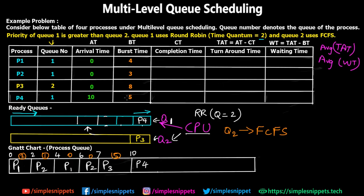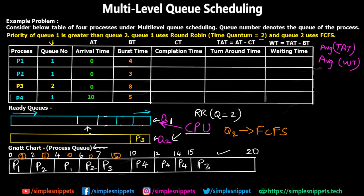Since there is only one process in queue one, P4 is executed repeatedly with the round-robin quantum of two. From 10 to 12 it's P4, from 12 to 14 it's P4 again — four milliseconds total. P4 requires five milliseconds, so one more millisecond runs from 14 to 15 and P4 is done. Now the CPU returns to P3, which has five milliseconds remaining, and executes it from 15 to 20. P3 is complete.